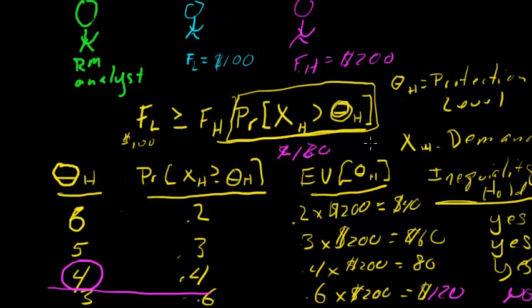The inequality doesn't hold. And we find our protection level by moving up to the previous selection. So the protection level, given our forecast of demand - our forecast of demand is going to give us a probability function. Given the probabilities associated with each one of these protection levels, we have just found that we'll maximize revenue by protecting 4 seats for the higher fare customers and allowing the rest of the seats to be sold for lower fare customers.